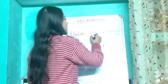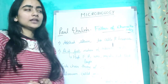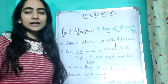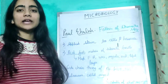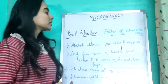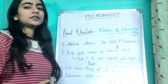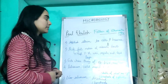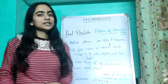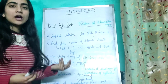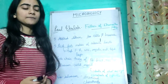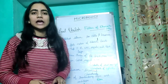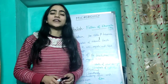Next, let's talk about Paul Ehrlich. He is known as the father of chemotherapy. His contributions: he introduced chemicals for therapeutic purposes, developed staining methods for tissues, and provided information about the acid-fast nature of tubercle bacilli.